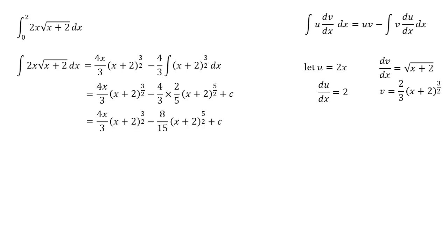Simplifying this, we end up with our integral being 4x over 3 times x plus 2 to the 3 over 2 minus 8 fifteenths times x plus 2 to the 5 over 2 plus c. We can now put our bounds back on and solve this.